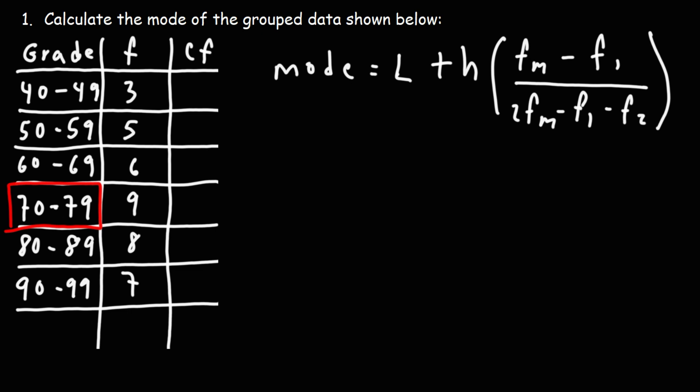Now, what we need to do is we need to calculate L, the lower boundary of that class. If these two numbers are the same, L would be 70. If they're different, it's going to be the midpoint of those numbers. The midpoint of 69 and 70, which is basically the average of those two numbers, that's going to be 69.5.